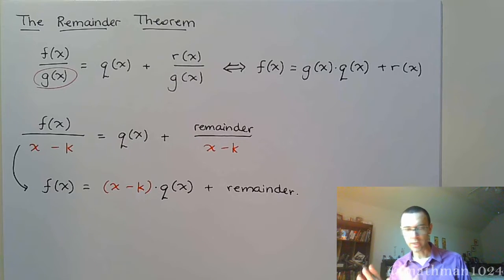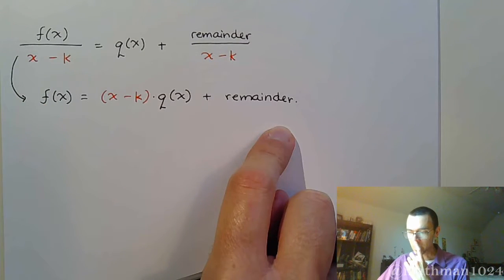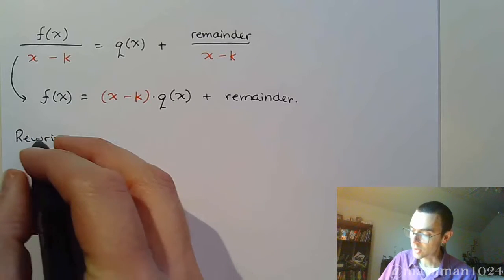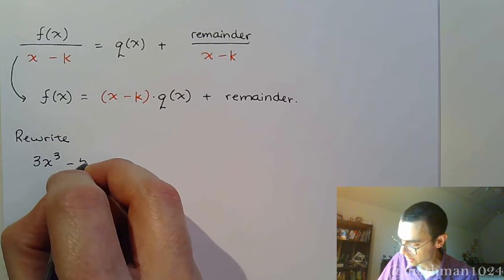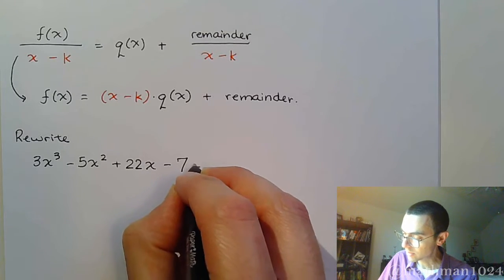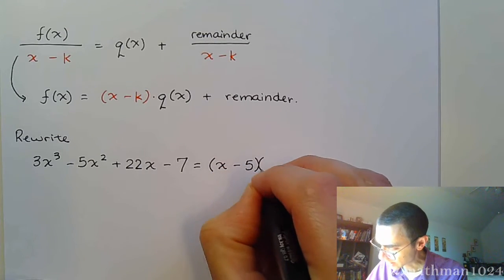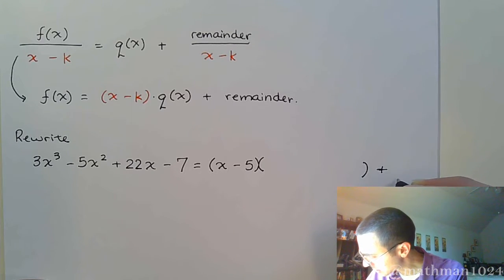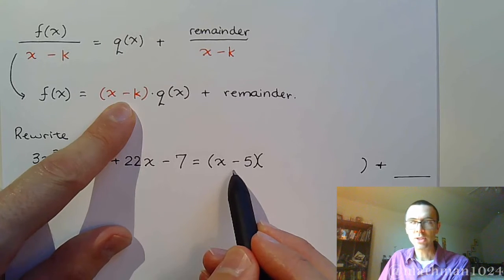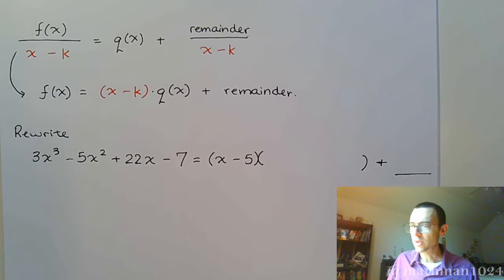This is going to lead us to the remainder theorem, which we'll get to in just a moment. You're going to see this form come up in the homework. They might ask you to rewrite a particular function — for example, rewrite 3x³ minus 5x² plus 22x minus 7 as x minus 5 times something plus something. Basically, they want you to write it in this form where x minus k is x minus 5, so we can do synthetic division. They want you to write your quotient and then the remainder.